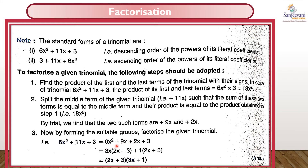So we split the middle term as 9x and 2x. From the first two terms, 3x is common: 3x(2x + 3). From the last two terms, 1 is common: 1(2x + 3). Now (2x + 3) is common in both groups. So the factors are (2x + 3) and (3x + 1).